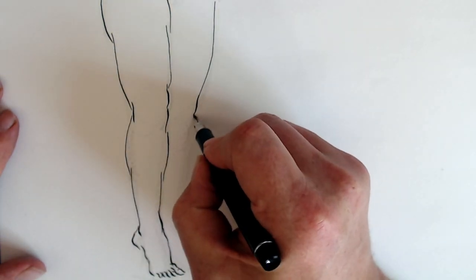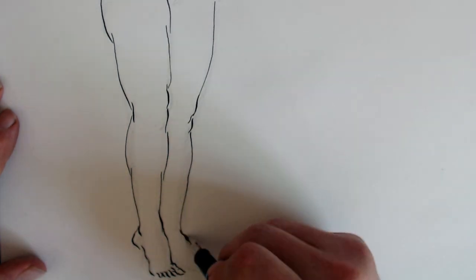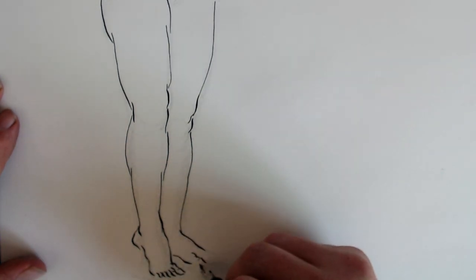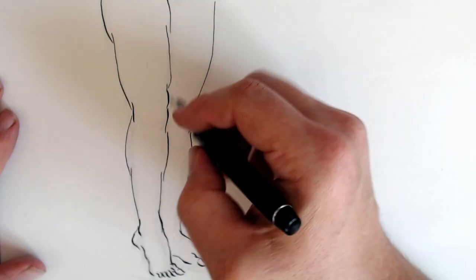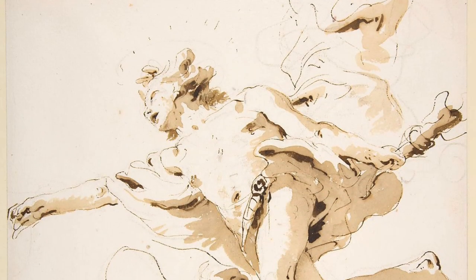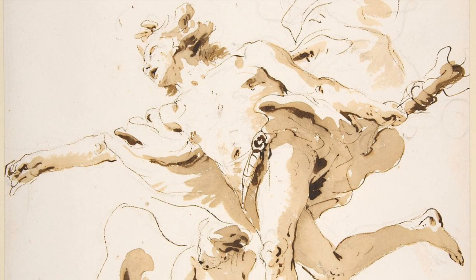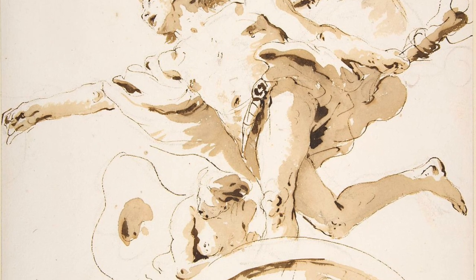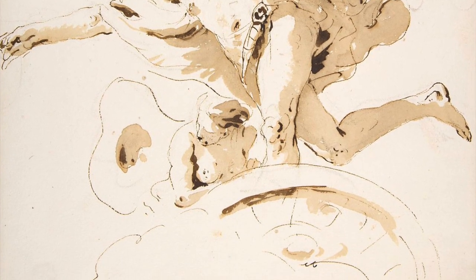Again, there will be situations where the rules of line will contradict each other. In such cases, it's up to you to decide which rule of line takes precedence. With me, the rule of depth usually wins out, but not always. Here's a lovely example by Tiepolo where, despite the looseness and spontaneity of the drawing, he manages to achieve a sense of solidity through his bold and selective line work.